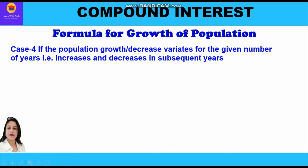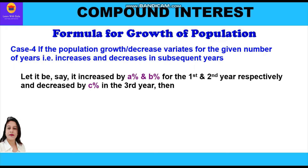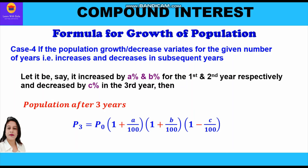Case four is an extension of case two where the population grows or decreases in subsequent years. If it increased a percent in the first year, b percent in the second year, and decreased c percent in the third year, then the population after three years is: P3 = P0 × (1 + a/100) × (1 + b/100) × (1 − c/100). Plus sign for growth and minus sign for decrease.